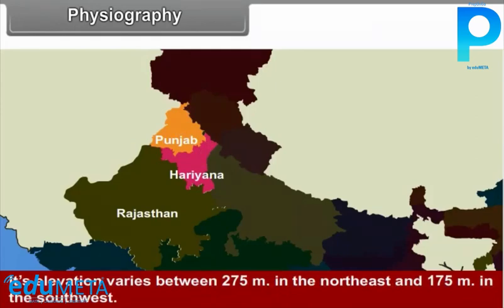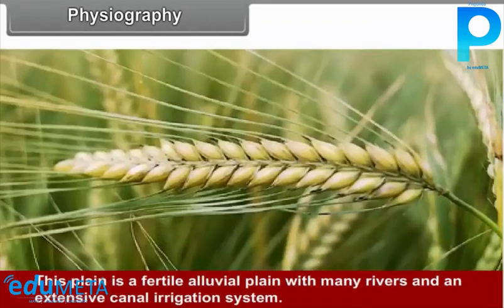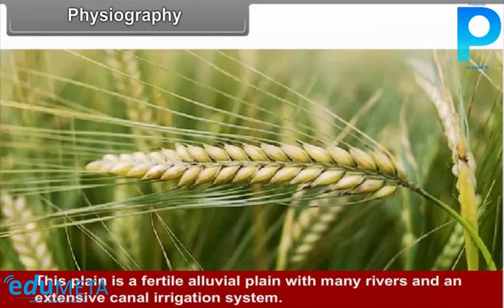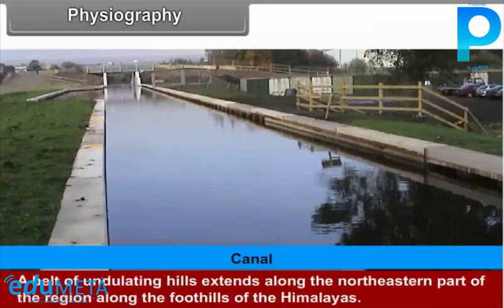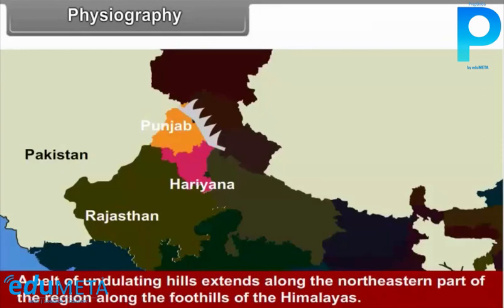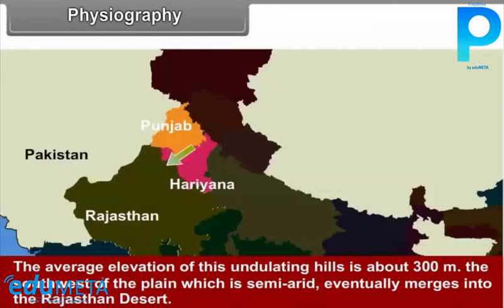Its elevation varies between 275 meters in the north-east and 175 meters in the south-west. This plain is a fertile alluvial plain with many rivers and an extensive canal irrigation system. A belt of undulating hills extends along the north-eastern part of the region along the foothills of the Himalayas, with an average elevation of about 300 meters. The south-west of the plain, which is semi-arid, eventually merges into the Rajasthan desert.